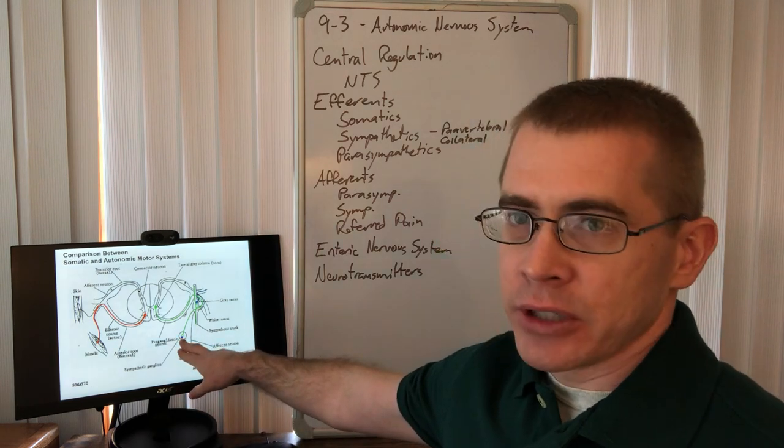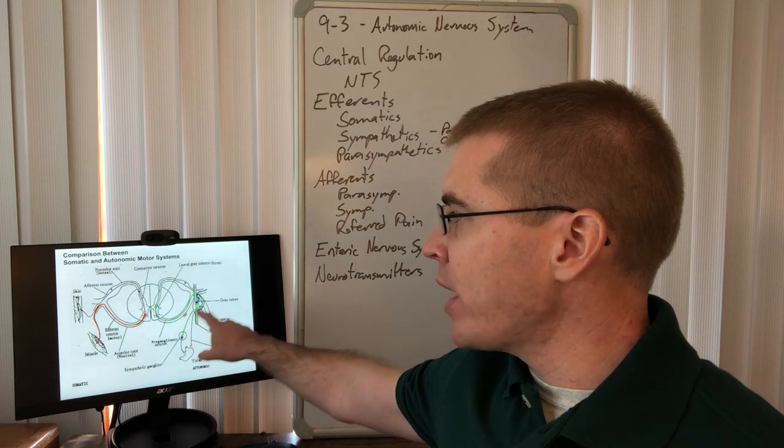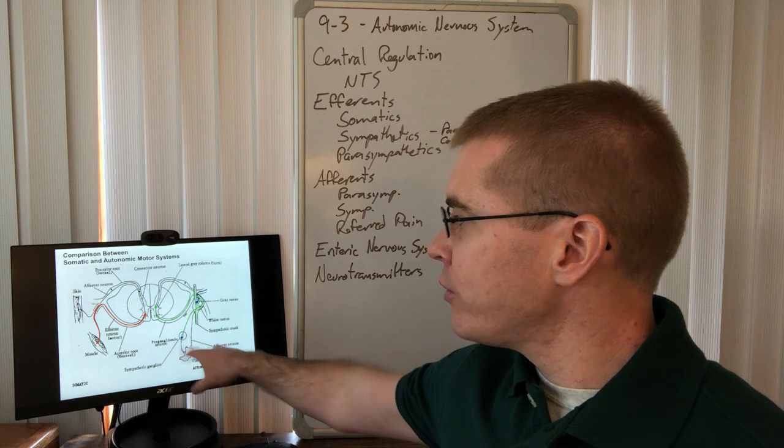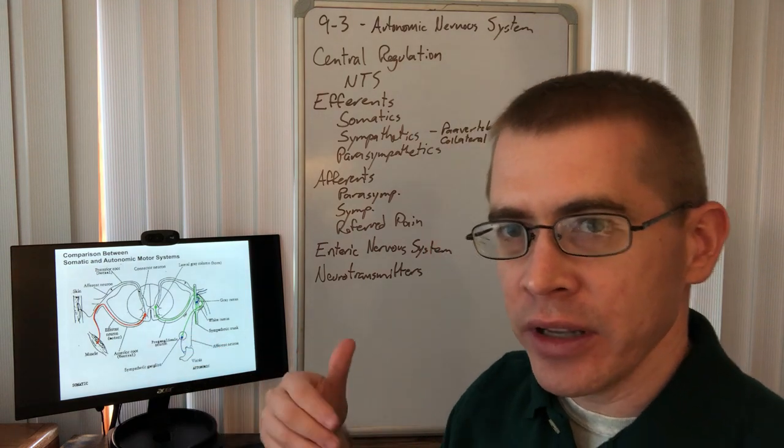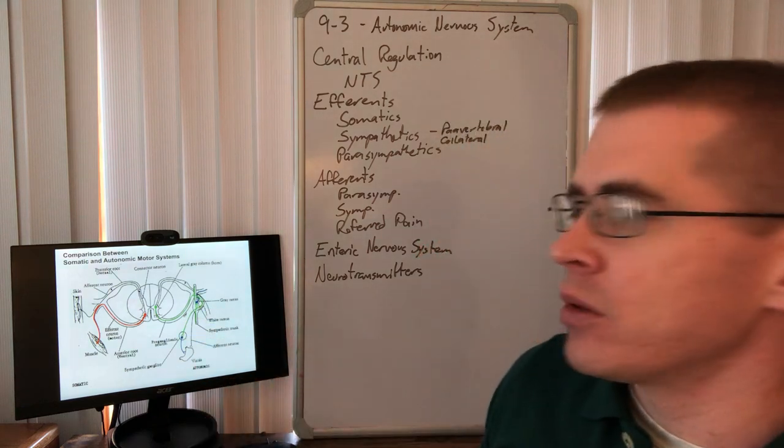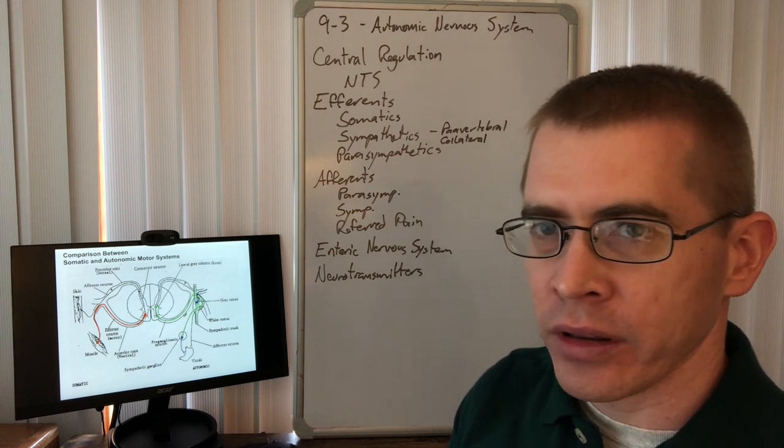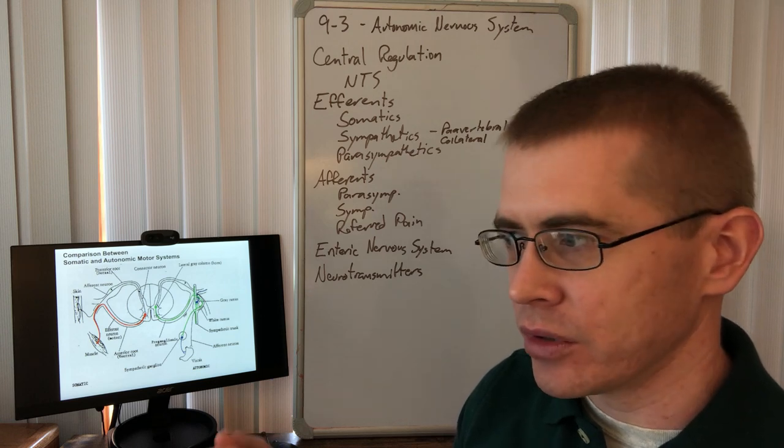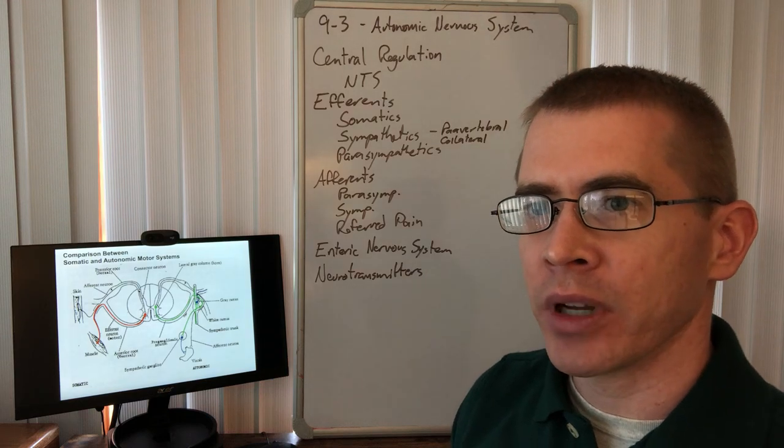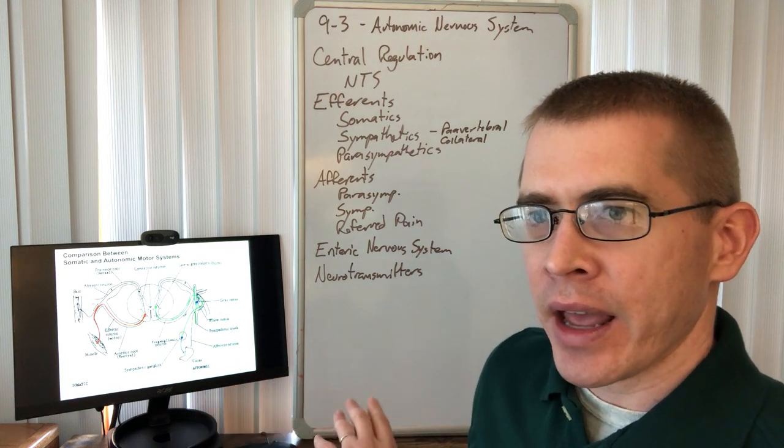There are also some exceptions. There are pre-ganglionic fibers that travel through nerves called splanchnic nerves. And these travel to, there's three of them, a greater, lesser, and least splanchnic nerve in the thoracic cavity. And so these splanchnic nerves synapse on what are called collateral ganglia, which are located near the organ that they'll innervate, usually along an arterial bifurcation at the location of an arterial bifurcation. So that's the comparison between the somatic and the autonomic.